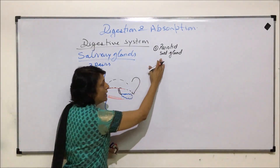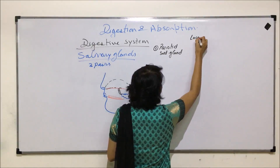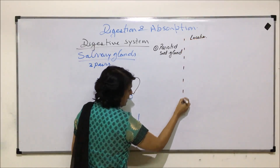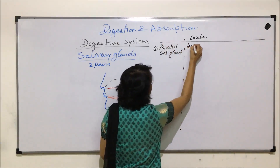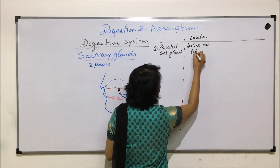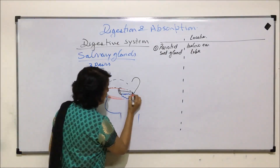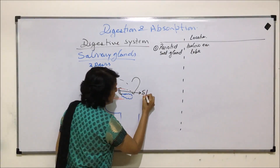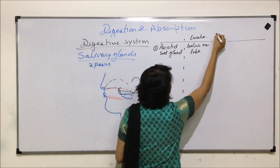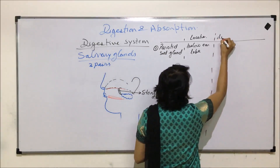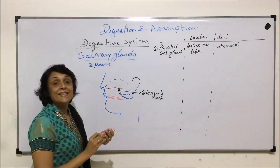In the case of the parotid salivary gland, the location is below the ear lobe, and this is the largest gland. The duct through which it opens is known as Stenson's duct.